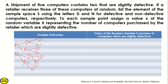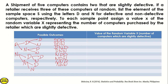So the possible outcomes are: three defective — D, D, D; two defective and one non-defective; then non-defective, two defective; then non-defective, defective, non-defective; then two non-defective and one defective; and then three non-defective. So we have 8 possible outcomes in total.